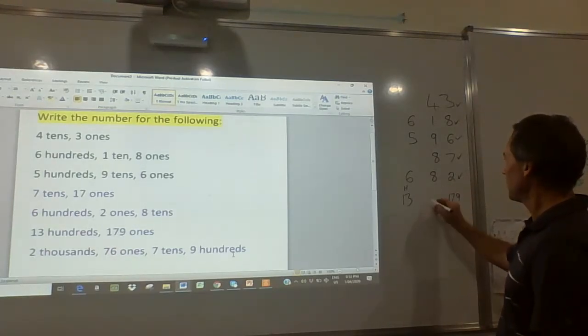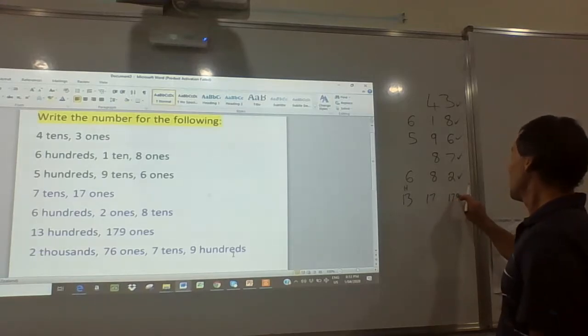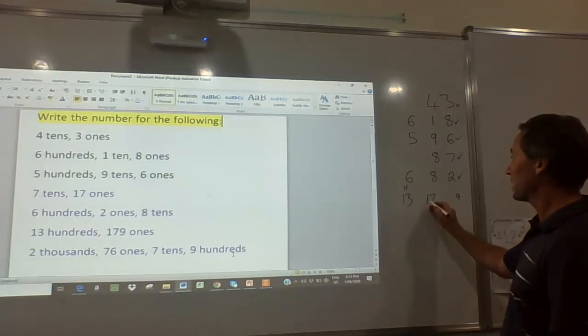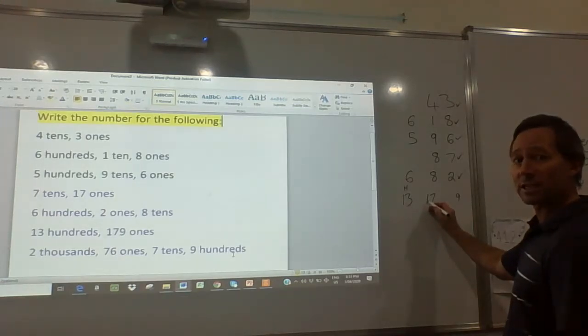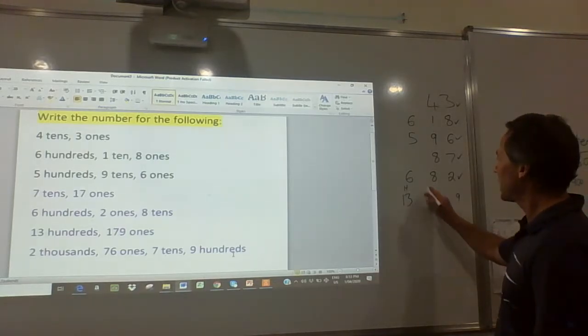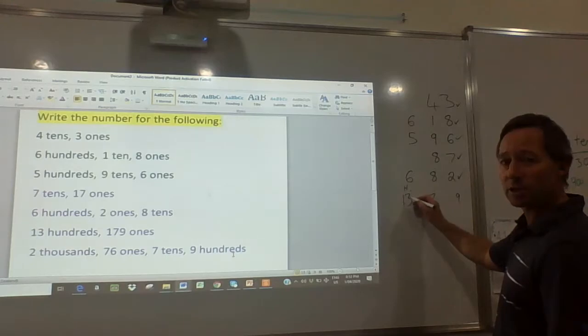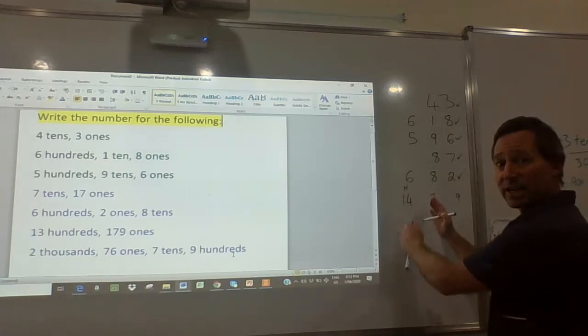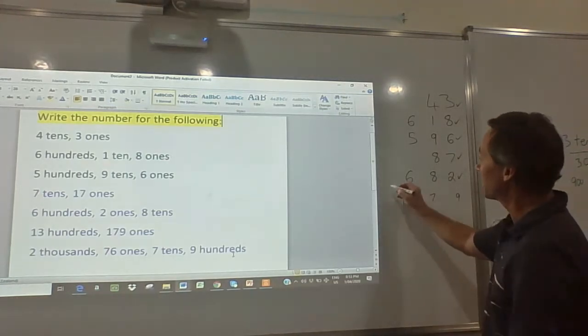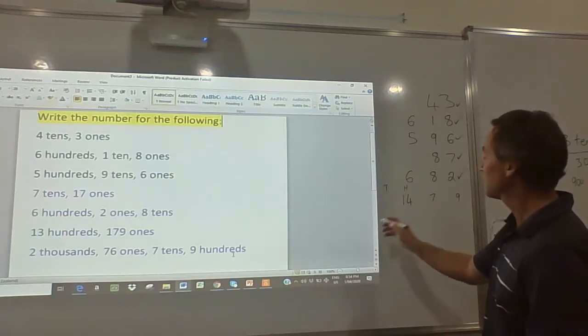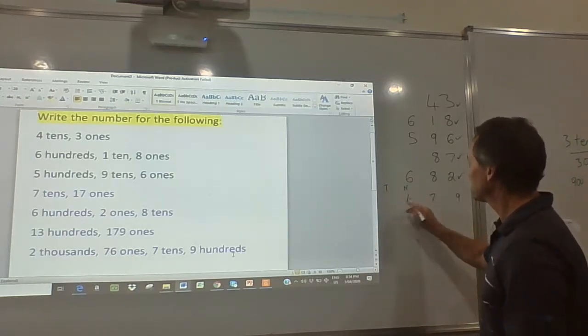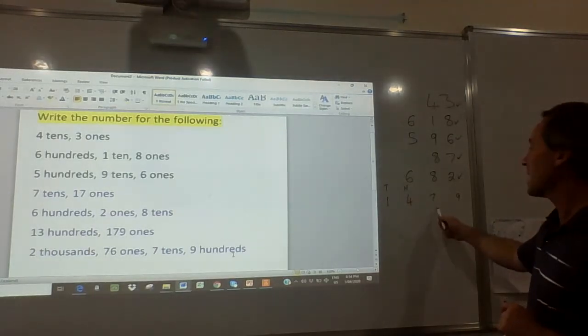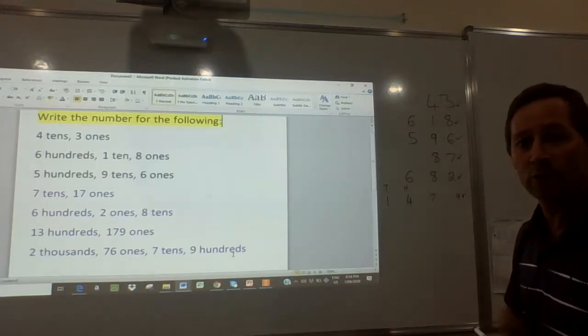179 ones, so I'm going to move these 17 over here. But we know we can only have one digit in each place value, so I need to bring this one, which is representing 100, add it onto here, which now says 13 plus one is 14. However, we can't have two digits in one place value, so I have to bring it over to the thousands column. So the one comes over here. So if you got the answer of 1479, you nailed it!